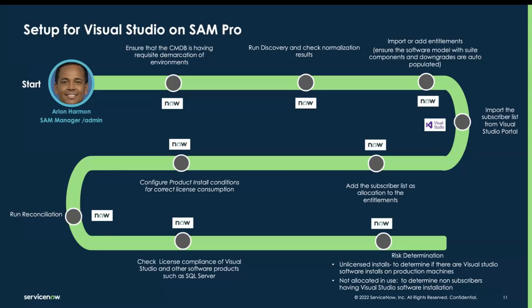Import the subscriber list from the Visual Studio portal and add it as an allocation to the entitlements on ServiceNow SAMPRO. Then configure a product install condition, which states that license consumption for Visual Studio happens on the dev environment, and for other software like SQL Server, it happens on the production environment. This ensures correct license consumption for the correct product. Finally, run reconciliation and check the license compliance results.